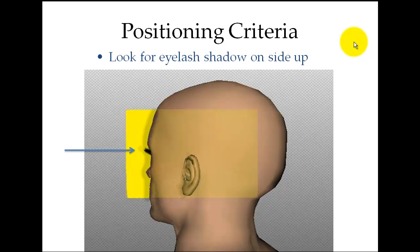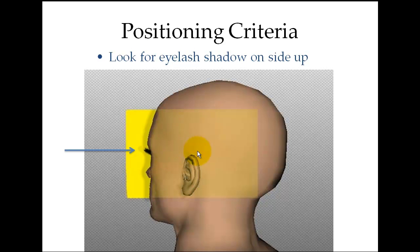If you can do it upright or prone on the table, make sure the AML is perpendicular. Then just rotate the head until you can see a good eyelash shadow forming. Still make sure the chin, nose, and cheek are touching, then do the rotation. It's going to be pretty easy to get once you get there.